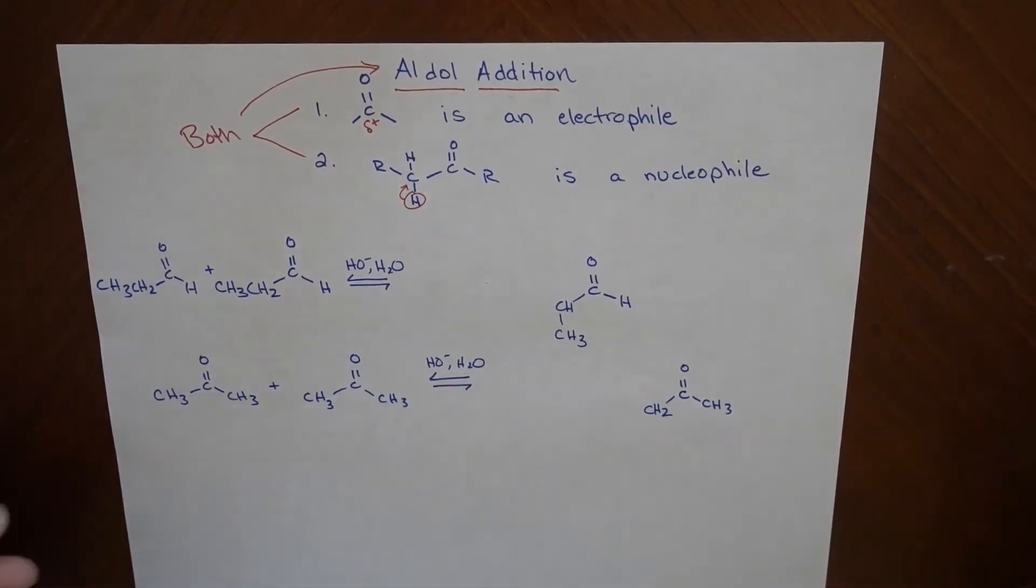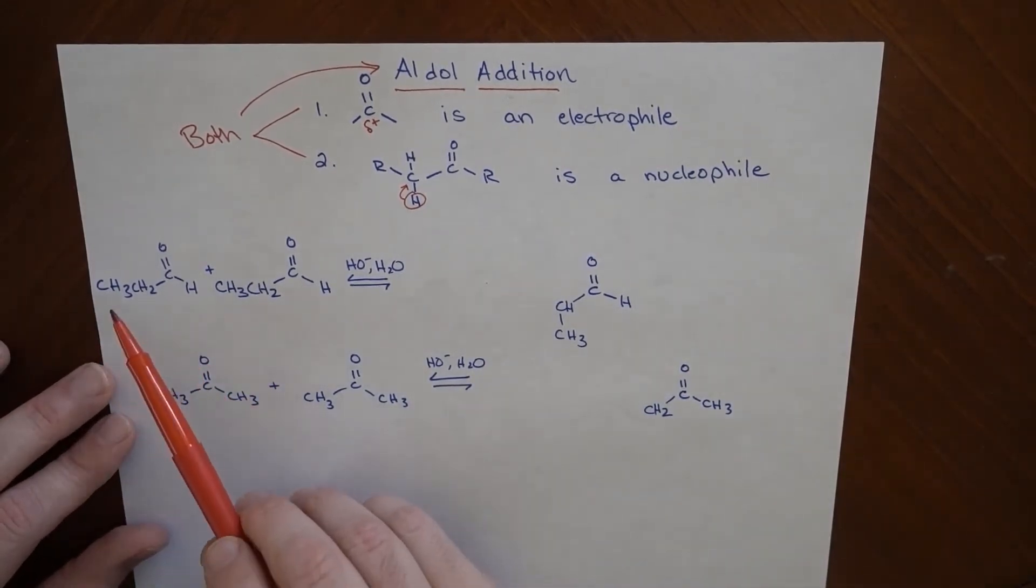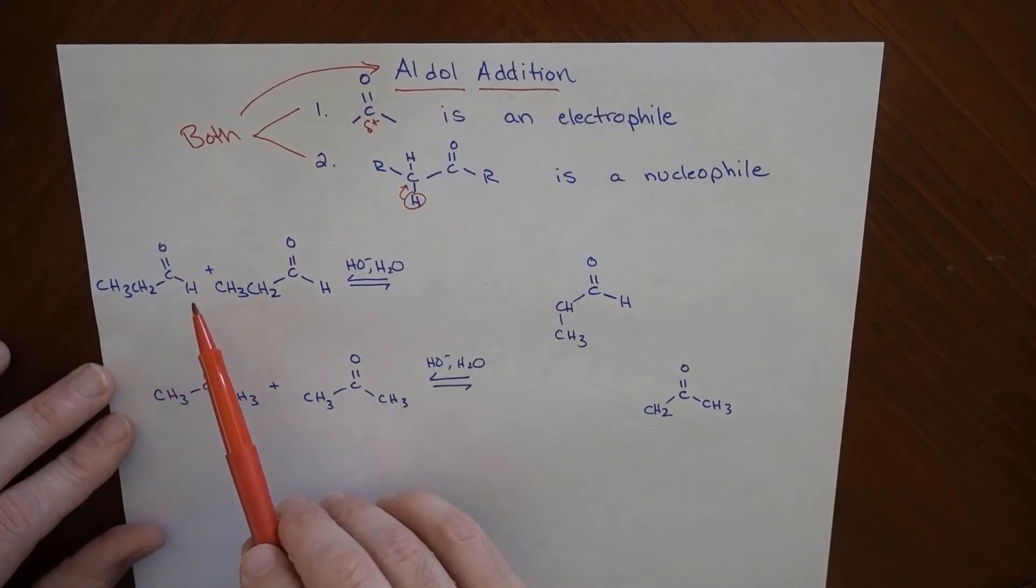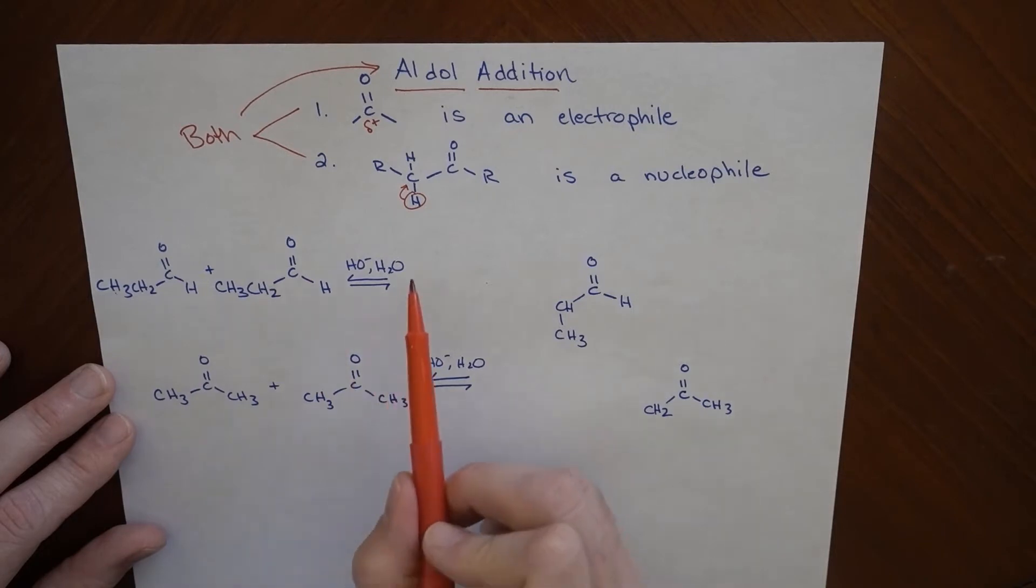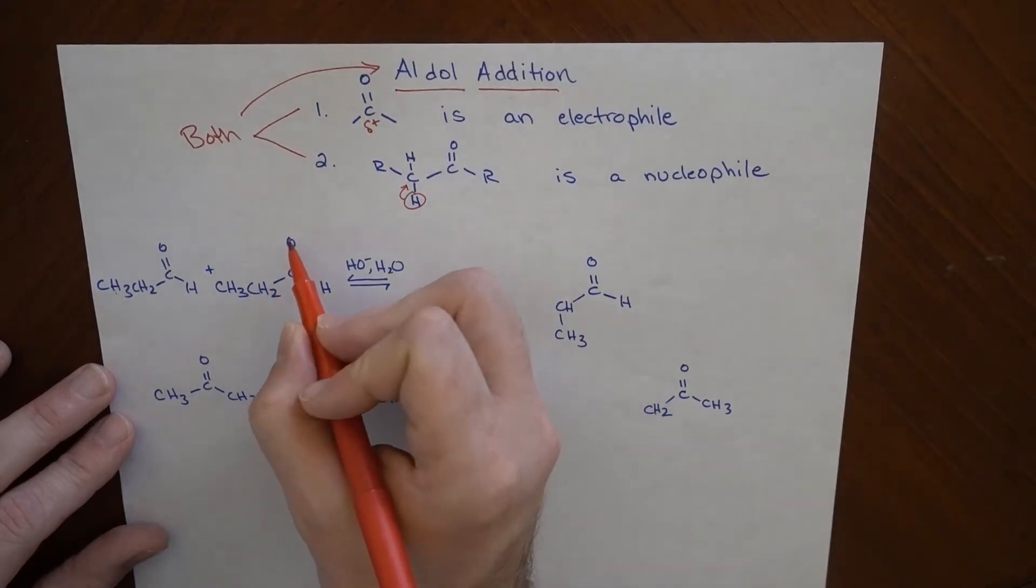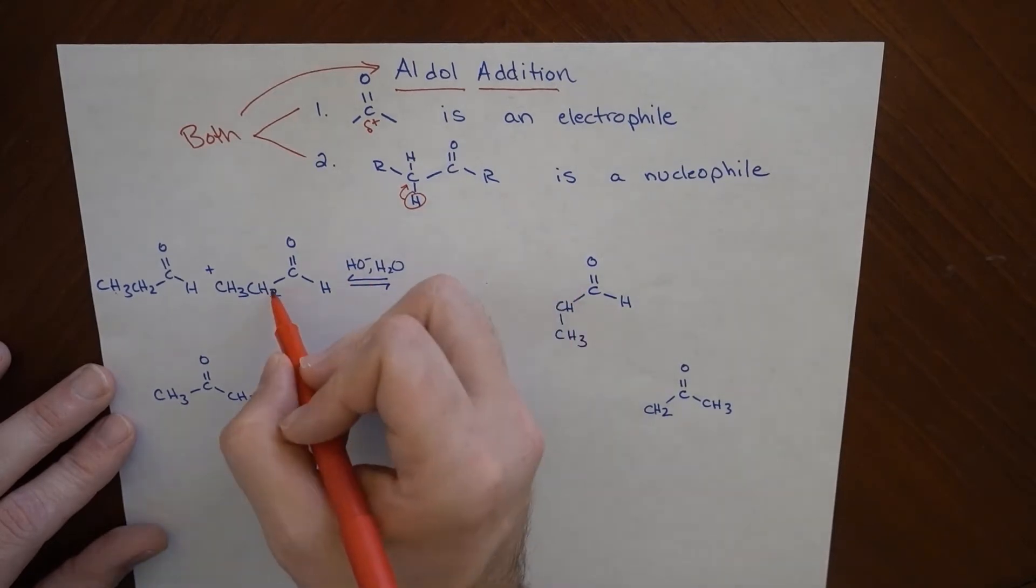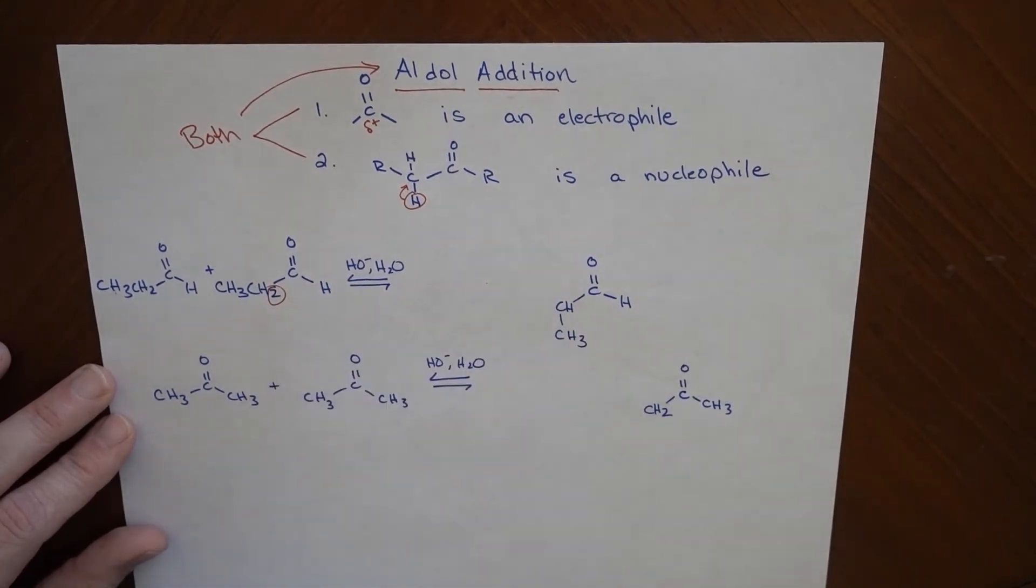So what does that look like in general? So here are two aldehydes, propanal, one, two, three carbons. And these two molecules are identical and they're acting with a little bit of base and water. So what's going to end up happening, and this is not the mechanism, but let's say this molecule right here is the one we're interested in, and this base is going to take away one of these hydrogens.